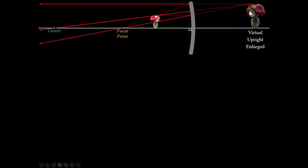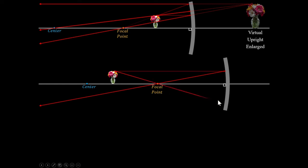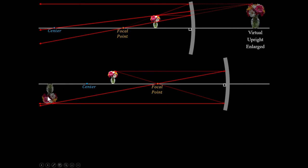If I place the object between the focal point and the center of curvature and draw the ray diagram — light coming in parallel goes through the focal point, light going through the focal point comes out parallel. Right there I can see that's where the image is. The third ray through the center misses the mirror so I won't bother with it. This image is real because the reflected rays of light really come together. It's inverted because it started above and ended below. It's enlarged because the image distance is greater than the object distance.